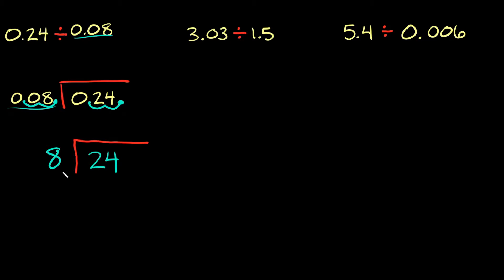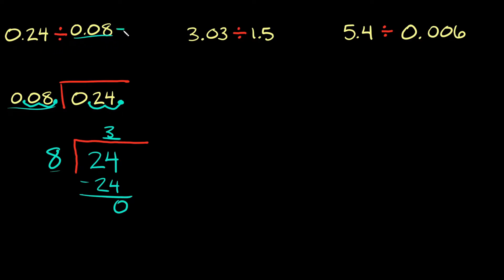You might even be able to do this problem in your head: 24 divided by 8. Does 8 fit into 2? No. Does it fit into 24? Yes — three times. Three times 8 is 24, you subtract and you have a zero remainder. So our answer is just 3. The original problem, 0.24 divided by 0.08, your answer would also be just 3.